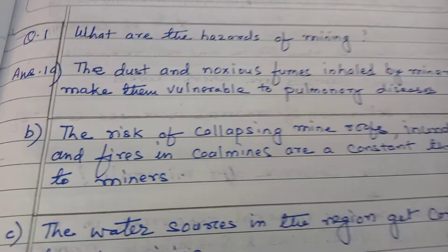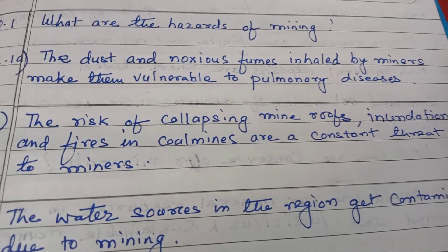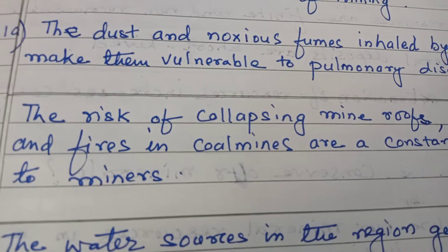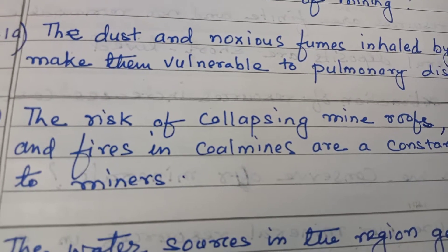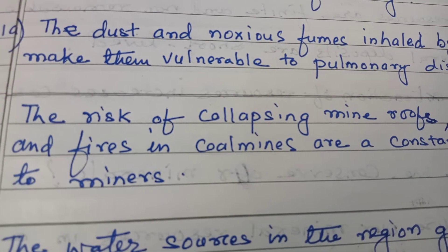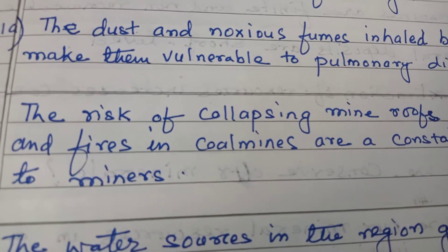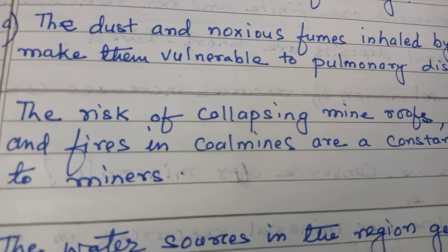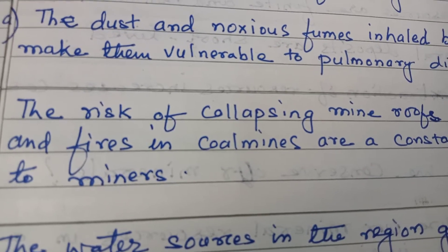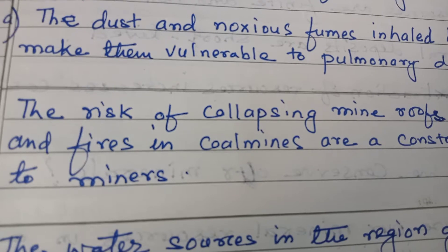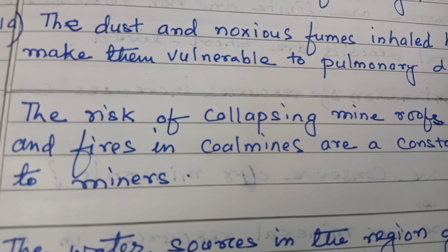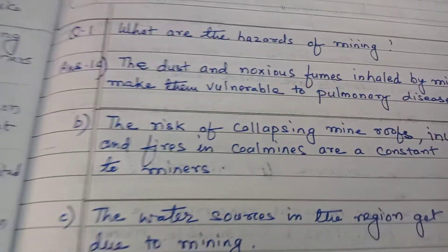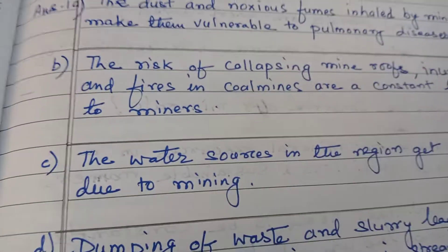The risk of collapsing of mine roofs, inundation, and fires in coal mines are a constant threat to miners. The roof of coal mines may fall down and the workers get buried under these roofs. Inside coal mines, there are chances of fires — methane gas is released and causes fire, which also leads to the death of a large number of workers.